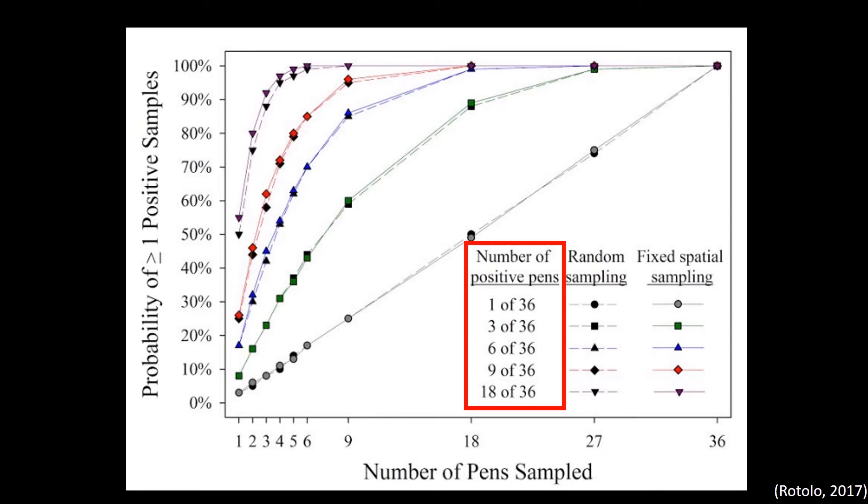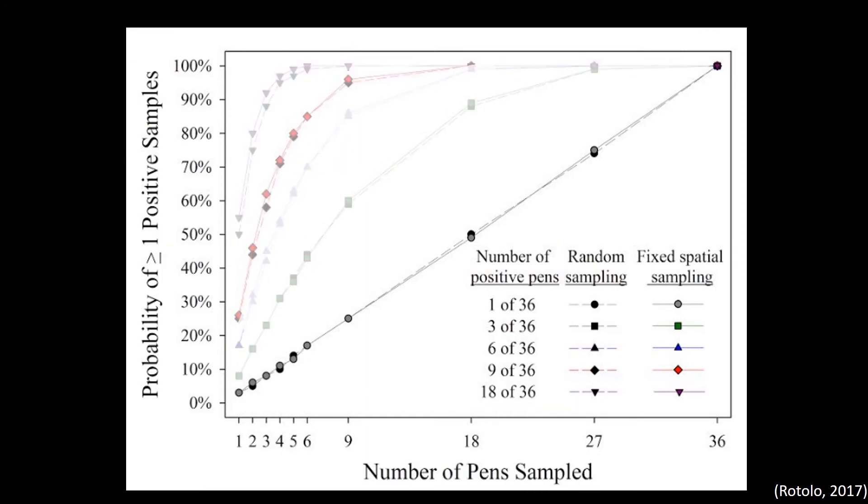Likewise, as the prevalence or number of infected pens within a barn increases, the probability of detection increases. For example, if there is one positive pen in one barn of 36 pens, and we use fixed spatial sampling to collect oral fluids in six of the 36 pens, then the probability that we will detect infection in one or more of those six samples is 17%. However, if the same number of samples is taken from one barn with nine positive pens, the probability of detecting infection increases to 85%.